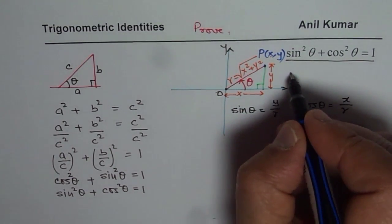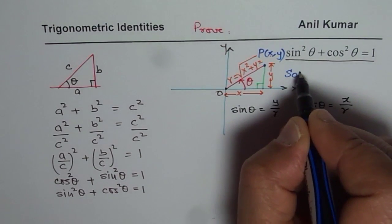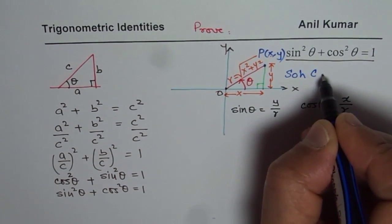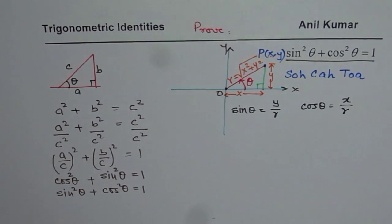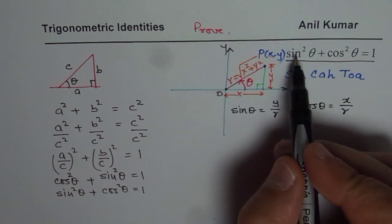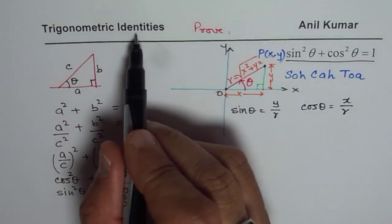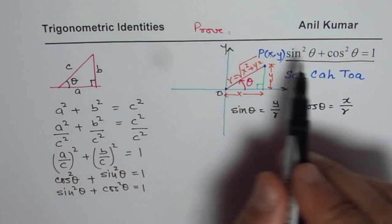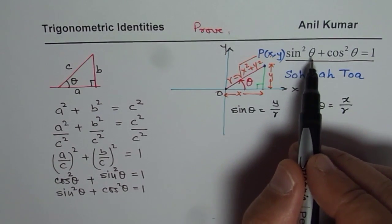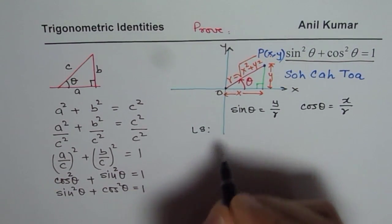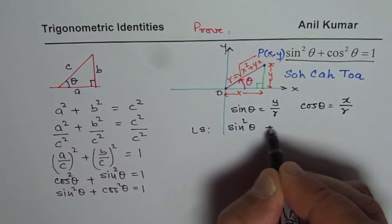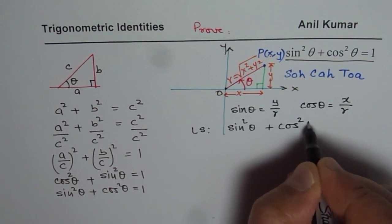So what I am using here is SOHCAHTOA, which is sine is opposite over hypotenuse, cosine is adjacent over hypotenuse, tan is opposite over adjacent. So we have sine theta as y over r, cos theta as x over r. So let me begin from the left side. And that is how we do identities. For identities, most of the time we solve from one side, which is more complicated. Here, more complicated is the left side. So let's begin by the left side,